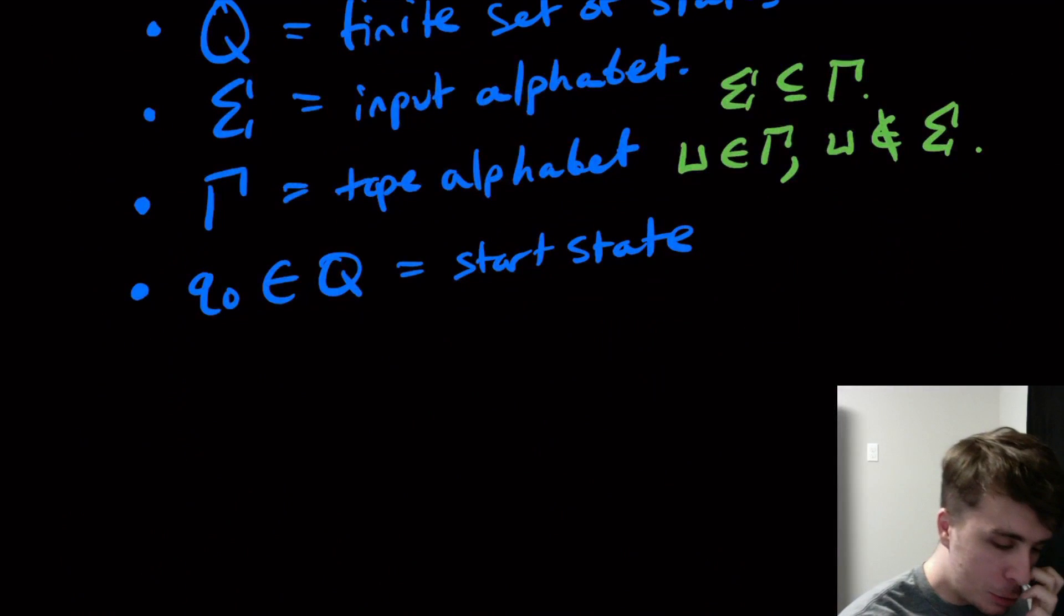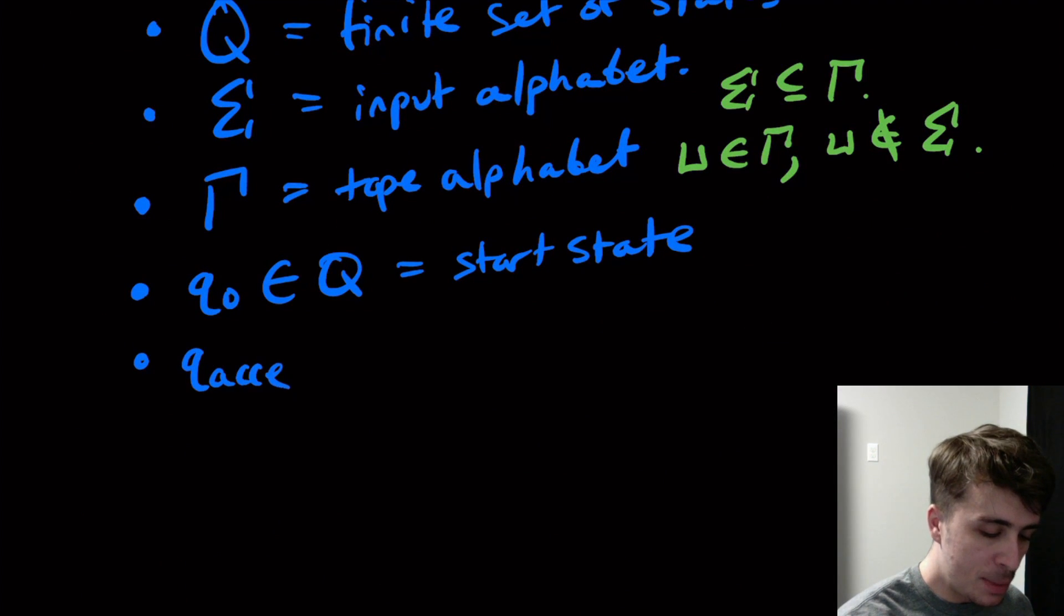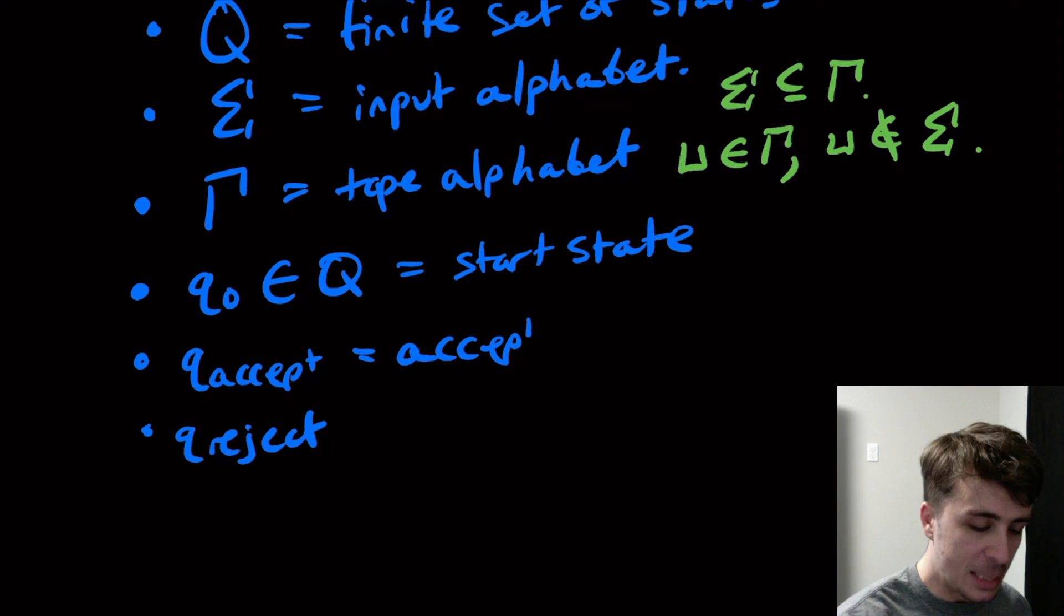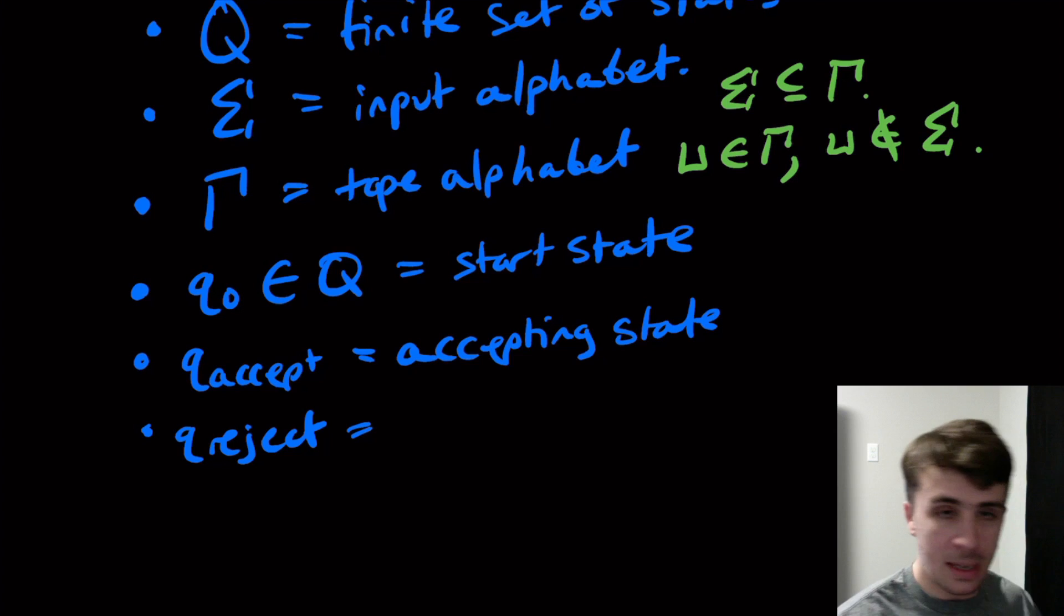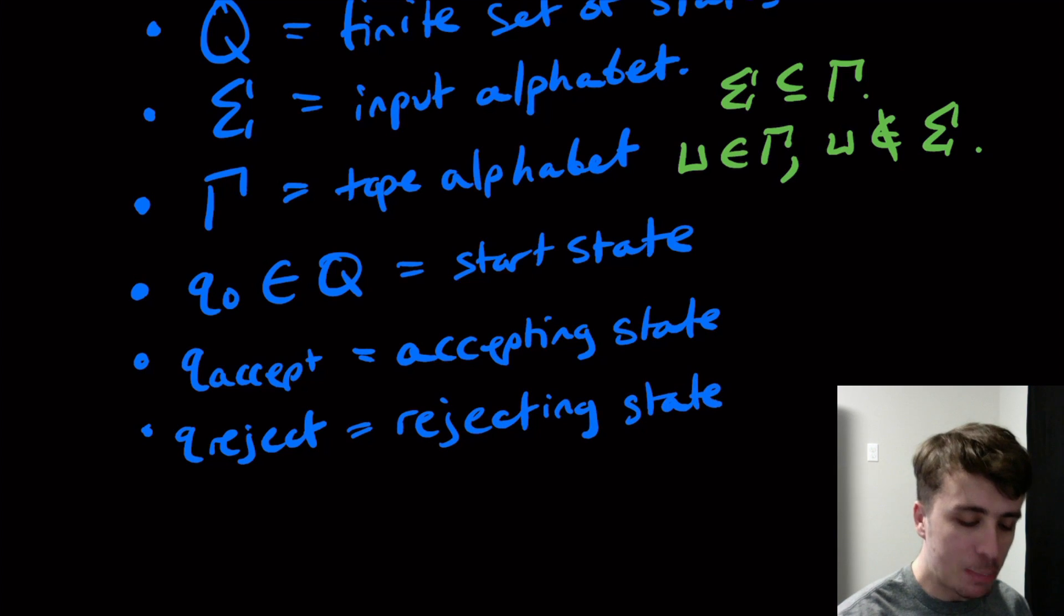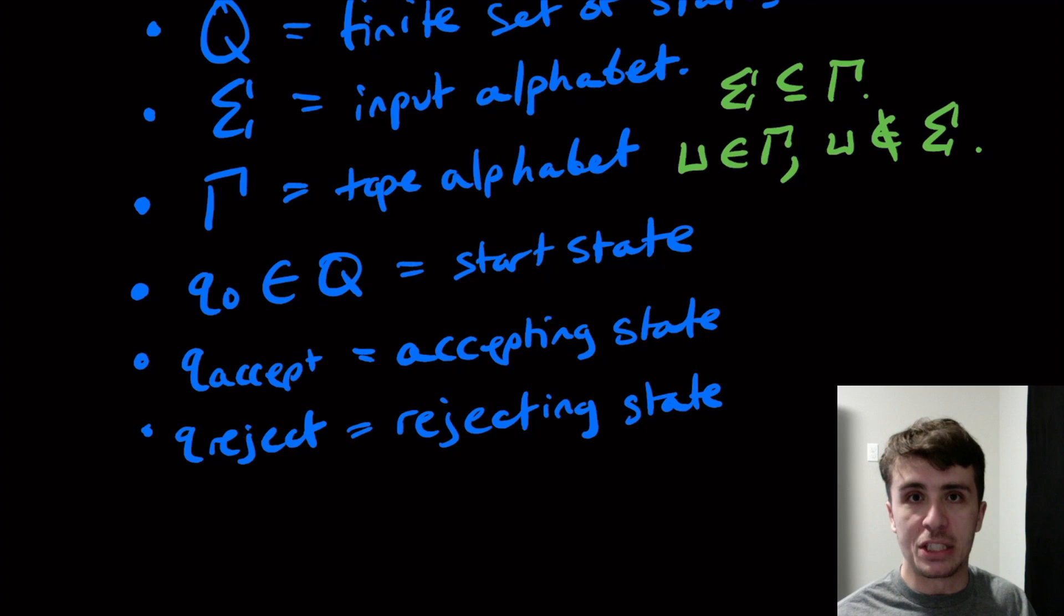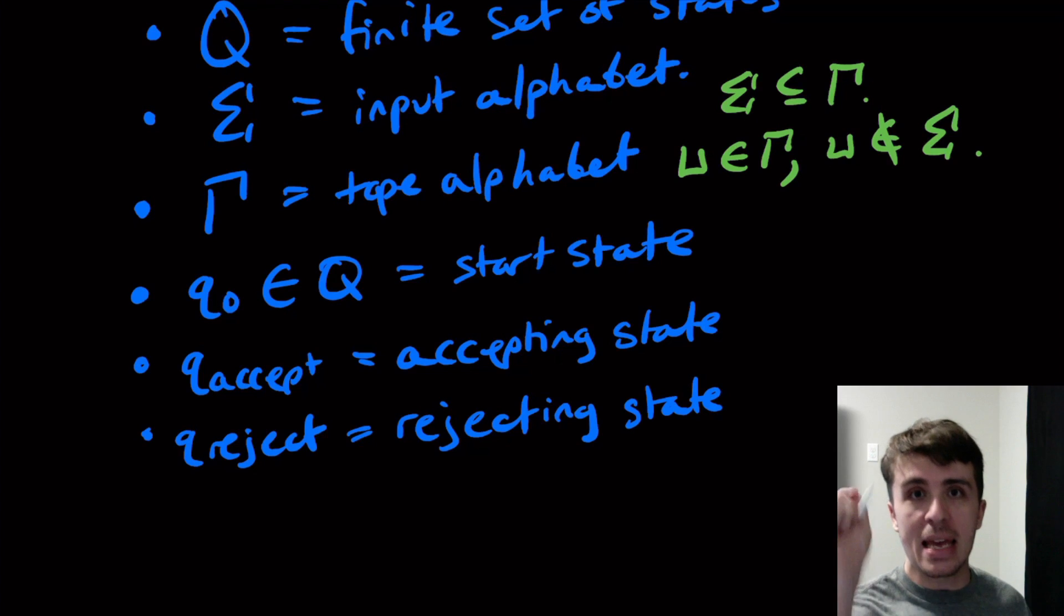If we allow the Turing machine to change cells at arbitrary points in the input, we don't know when we're actually done necessarily. We might come back through the input and change cells later and do some more work. We can't just say that a certain cell is a final state or not. We need a special place to force the machine to stop.